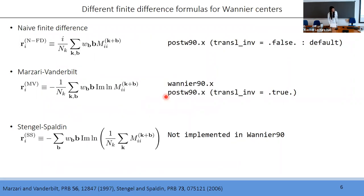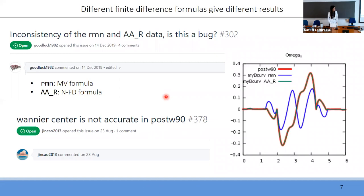In the Wannier90 code, only the naive and Marzari-Vanderbilt formulas are implemented. The naive formula is the default in postw90.x, while the Marzari-Vanderbilt formula is used in wannier90.x. This difference has led to confusion among users — there are two open issues in the Wannier90 repository on this topic. In one issue it is reported that the Rmn and the Berry curvature give very different results, because those two quantities are calculated using two different formulas. It is therefore highly desirable to determine which formula is more accurate.